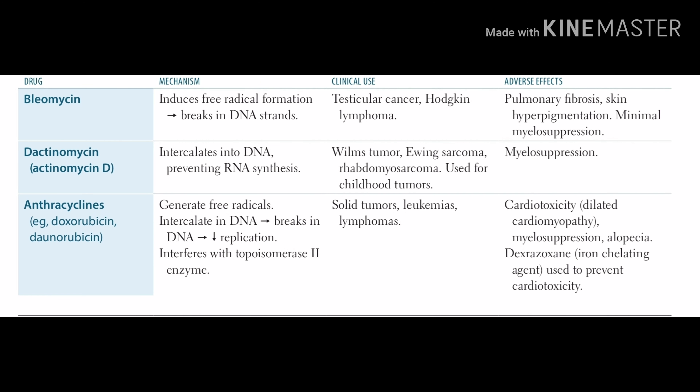In the textbook, bleomycin's mechanism of action is inducing free radical formation and breaking DNA. It is clinically used in testicular cancer and Hodgkin lymphoma, with adverse effects of pulmonary fibrosis and skin hyperpigmentation, with minimal myelosuppression. One thing to add: bleomycin works in the G2 phase of the cell cycle — the two testes in the image remind you of G2.